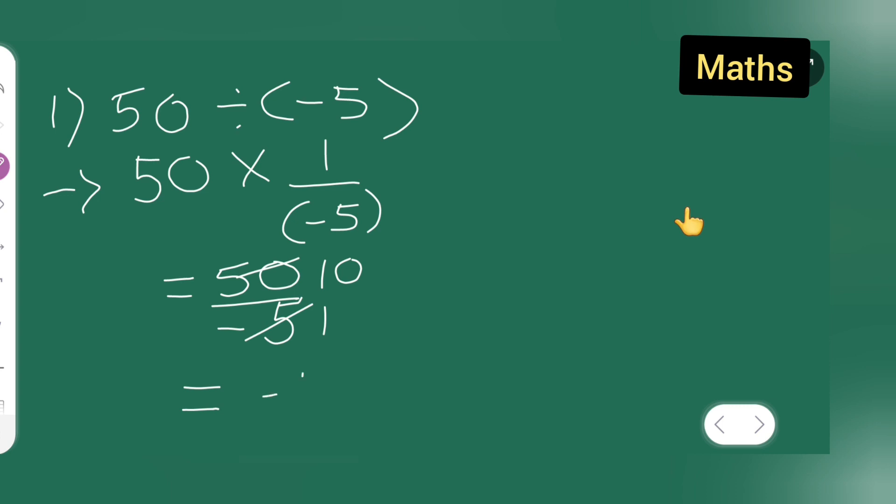Minus 10 will be your answer. Basically this was what? 10 upon minus 1, which is nothing but is equal to minus 10. Okay, is equal to minus 10 after this step.